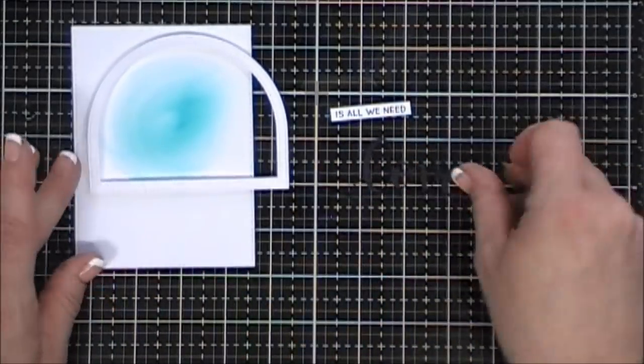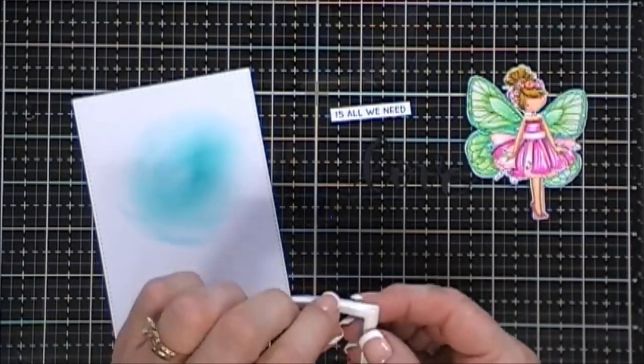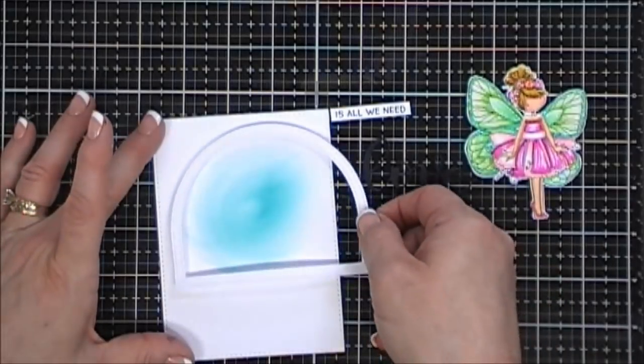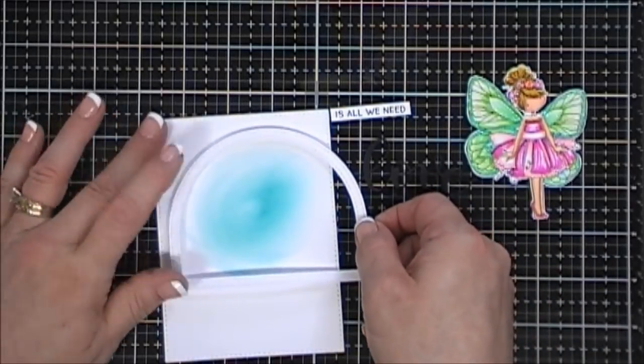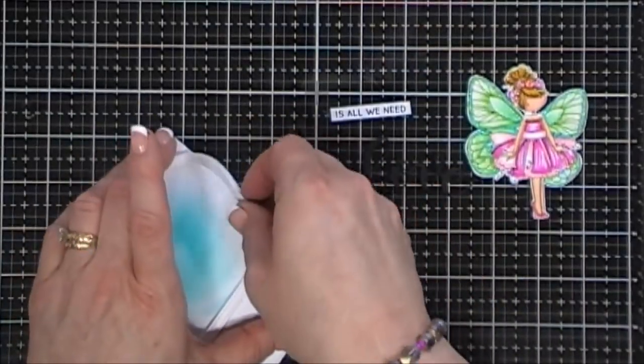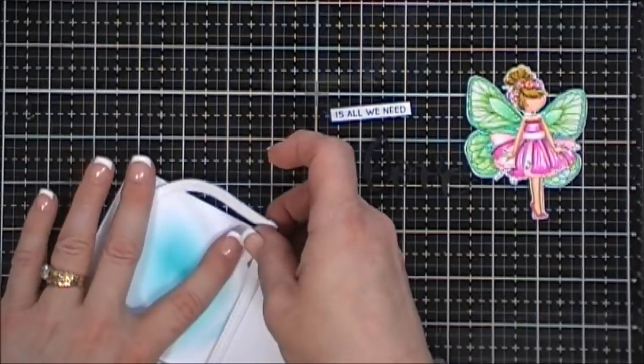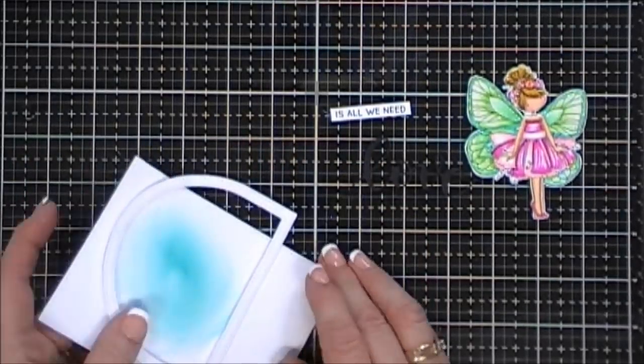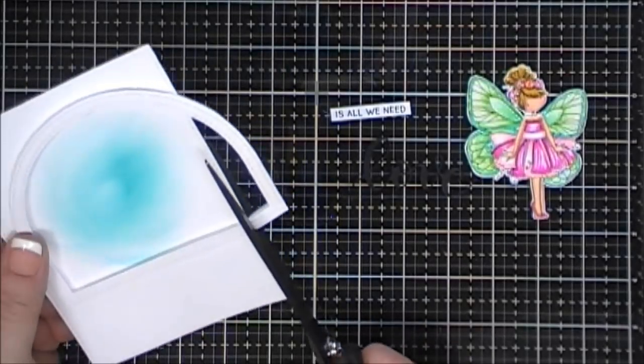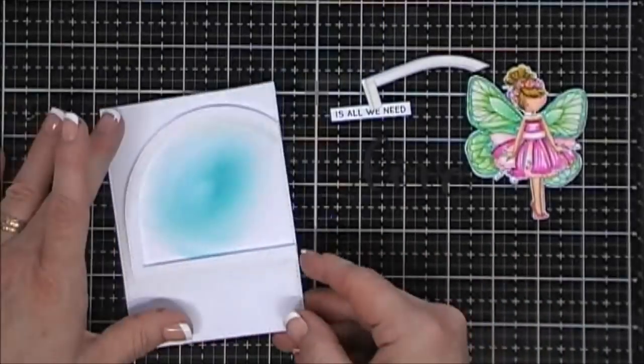We're going to arrange how we want my little scene to look. I'm just going to remove the adhesive backing off of my frame and place that on my panel. I got it crooked again, and I guess it wouldn't be one of my cards if I didn't get something crooked in it. But I straightened it up and I'm just going to trim off the excess.